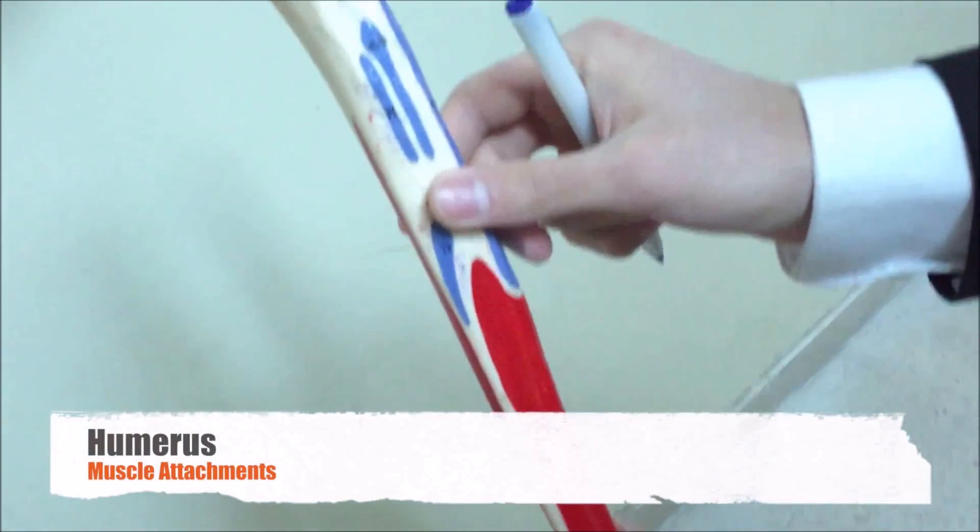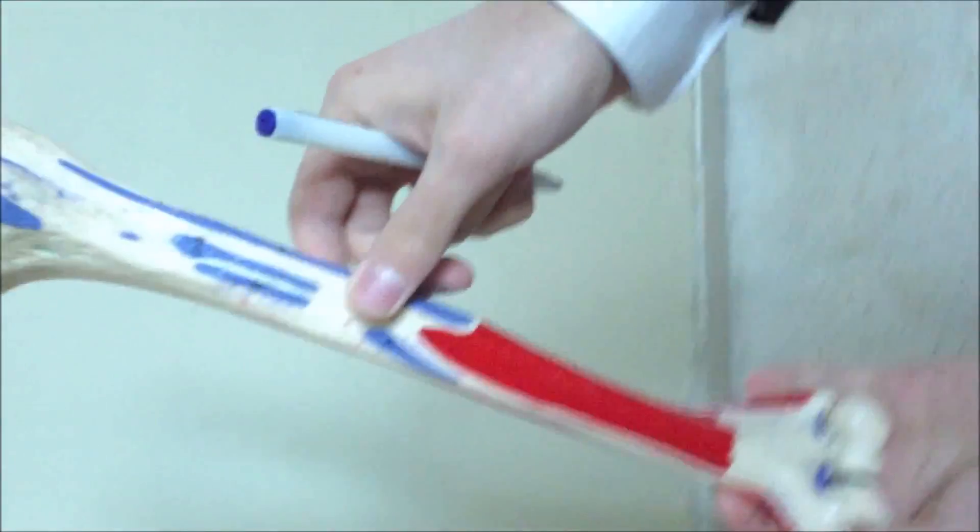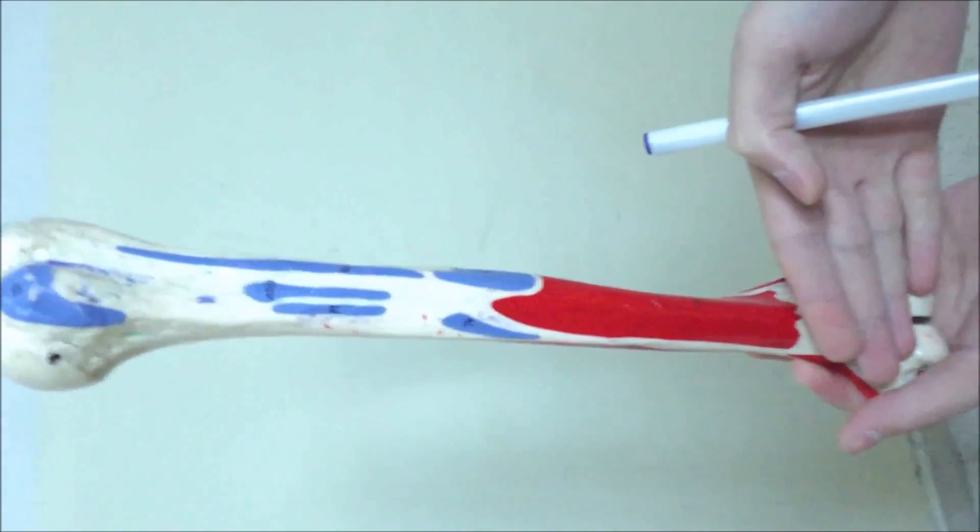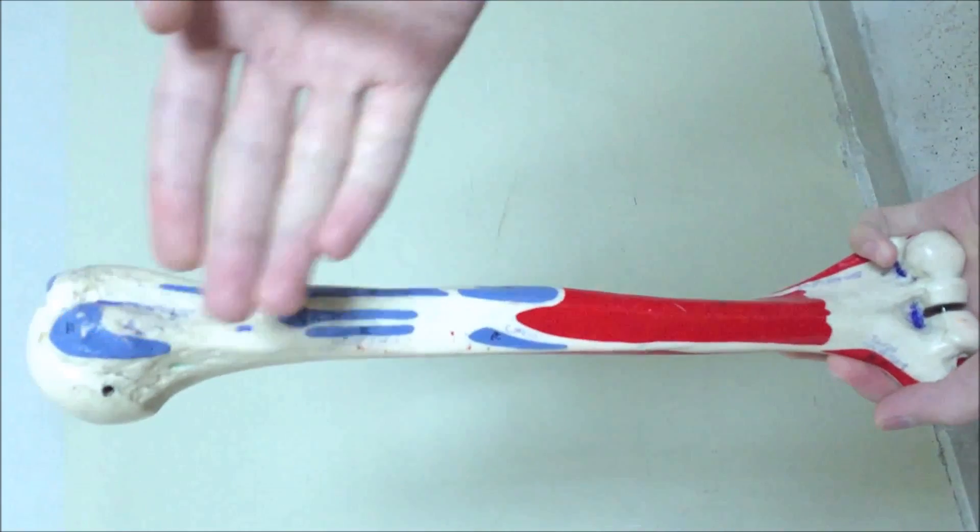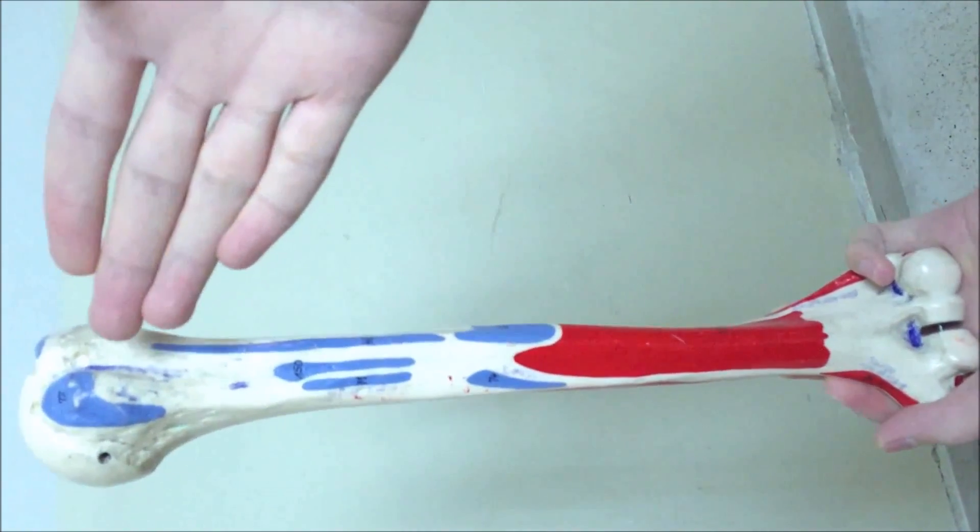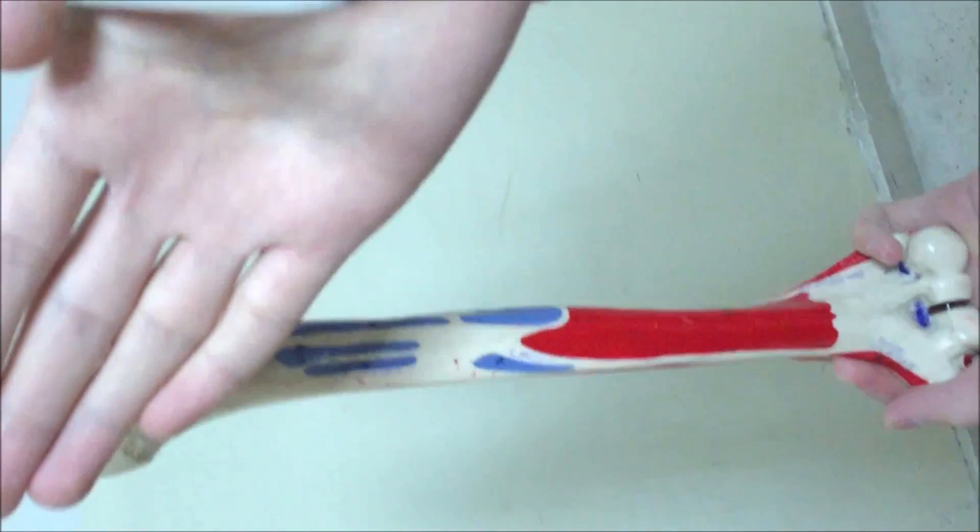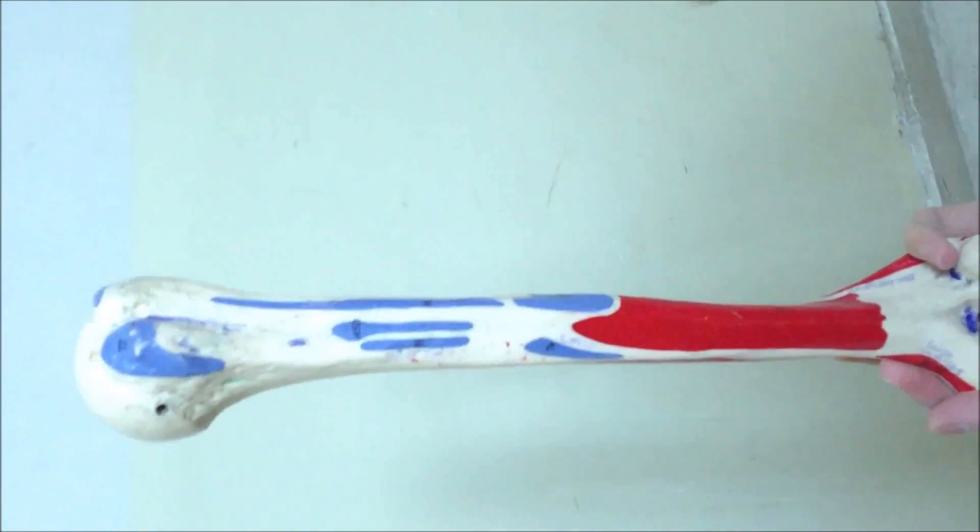We're going to talk about the muscle attachments of the humerus. This is an anterior view of the left humerus. We know that because we see the lesser and greater tuberosities in the intertubercular groove, so it is anterior. It faces like this, so it is the left humerus.